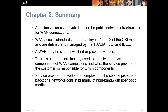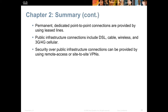In summary, a business can use private lines or the public internet to interconnect their locations. WAN access standards typically operate at layers one and two of the OSI model. A WAN may be circuit or packet switched. There is common terminology used to identify the physical components of WAN connections. Service provider backbone networks consist primarily of high-bandwidth fiber optic media. Permanent dedicated point-to-point connections are provided by leased lines. Public infrastructure connections include DSL, cable, wireless, and cellular. Security over public connections can be provided using encryption or VPNs.